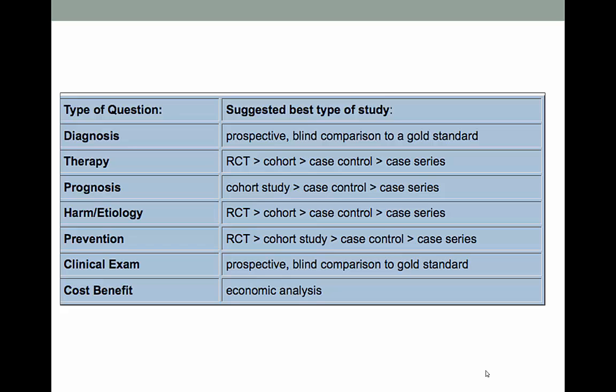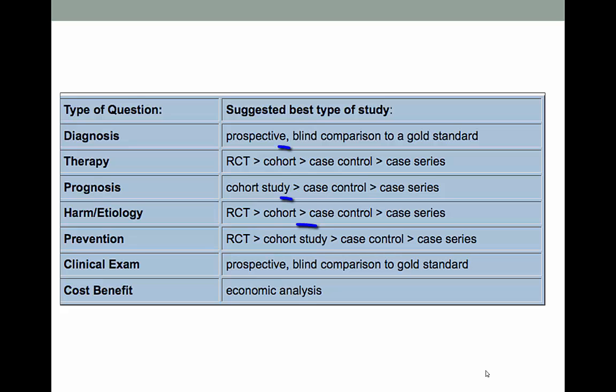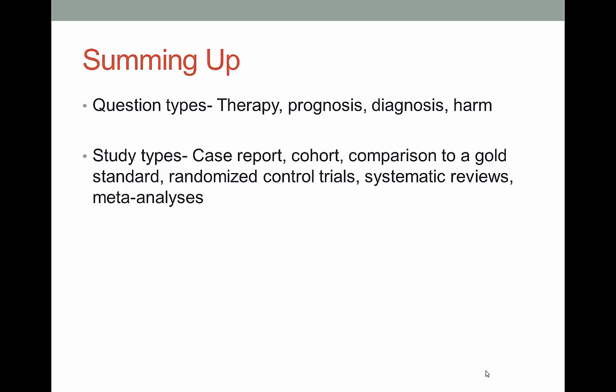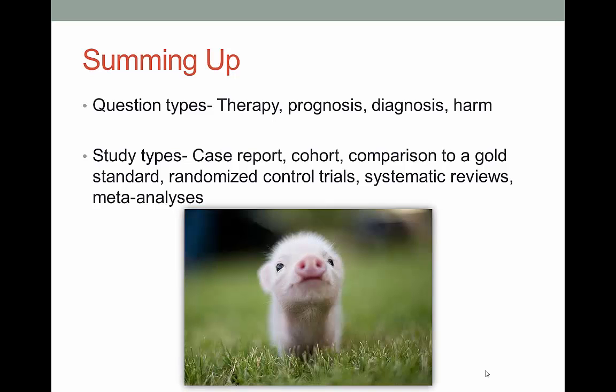Now that we know more about what each of these studies entails, let's think about why the studies appear where they do on this chart. Randomized control trials are the gold standard, but you can't always find one — in some instances it would be unethical. So you move on to a cohort. If you can find a systematic review of randomized control trials on your topic, do a little dance because someone has done all the heavy lifting for you. Summing up: you should have a good feel for the main question types — therapy, prognosis, diagnosis, and harm — and an understanding of what each study type entails. Next, we'll talk about the varying levels of evidence and how to use the library's resources to find great evidence-based information. To reward you for making it through a less-than-exciting lecture, here's an adorable baby pig.